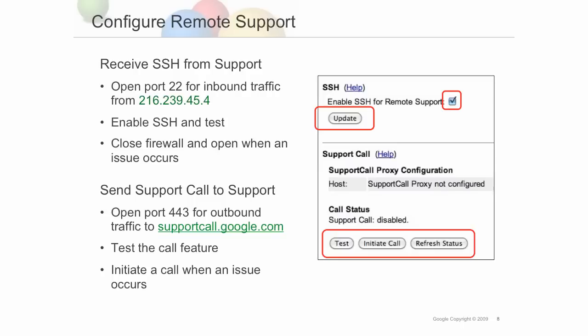It is also highly recommended that you configure remote support with Google before you have any issues. This way, Google support will be able to view log messages from processes running on your box and diagnose a problem. You can either receive remote SSH requests for support, send a support call to support, or set up a modem if network access into your data center is not allowed. If you use SSH, open port 22 for inbound traffic from the IP shown here. Enable SSH on the box, test access, then close your firewall and open it when needed. This way your box is always ready to receive requests.